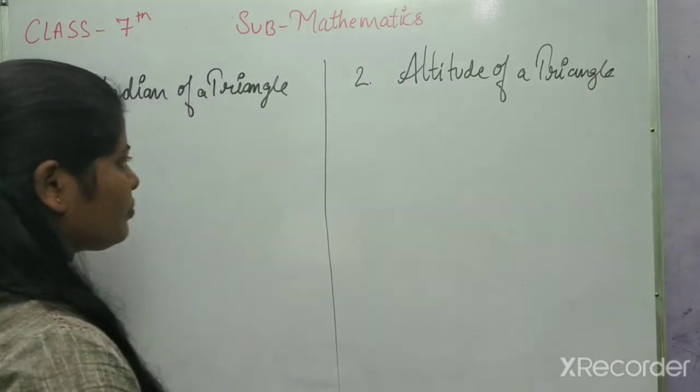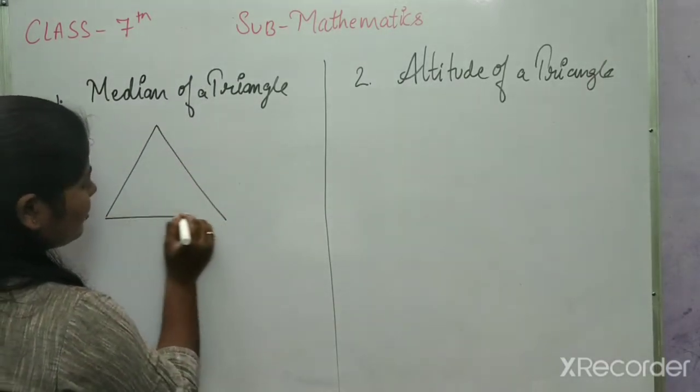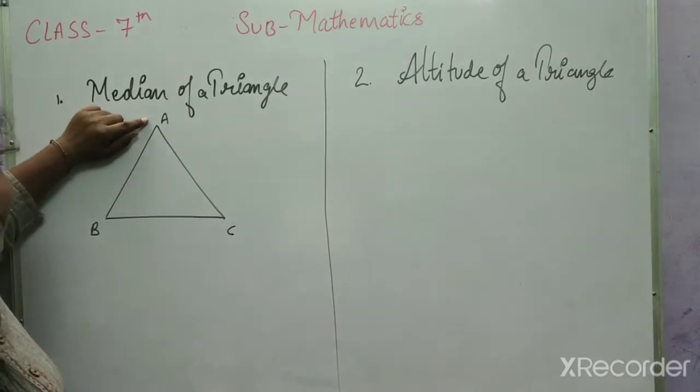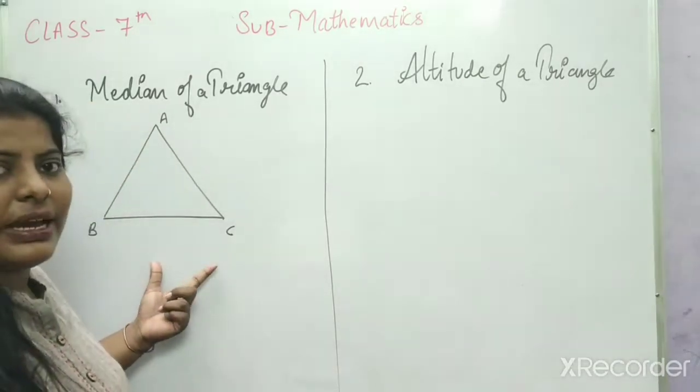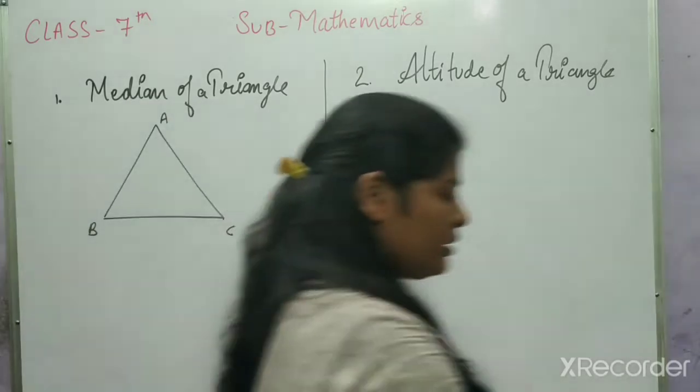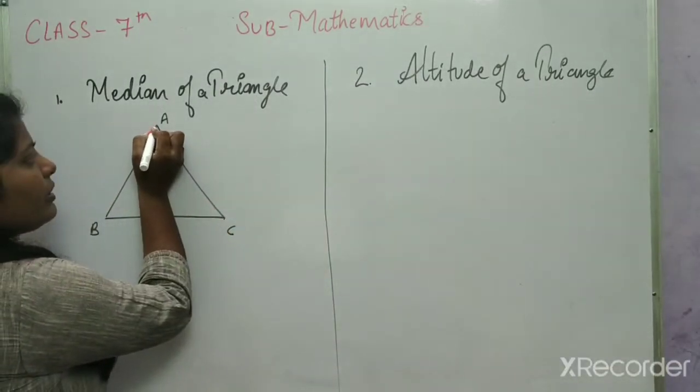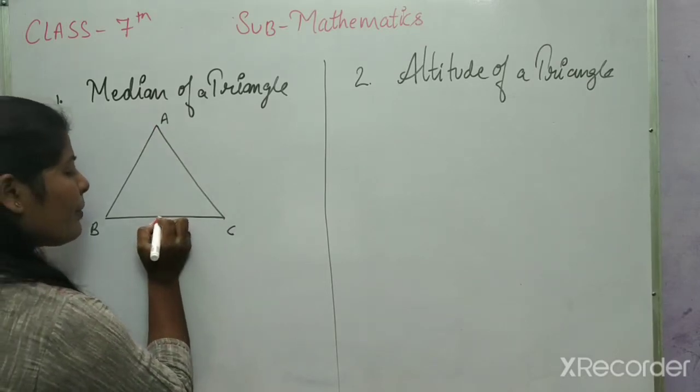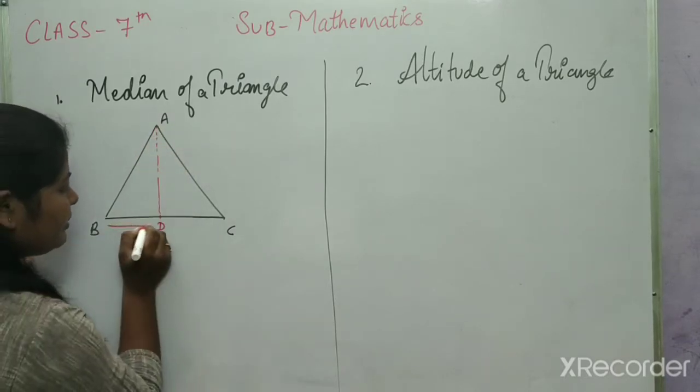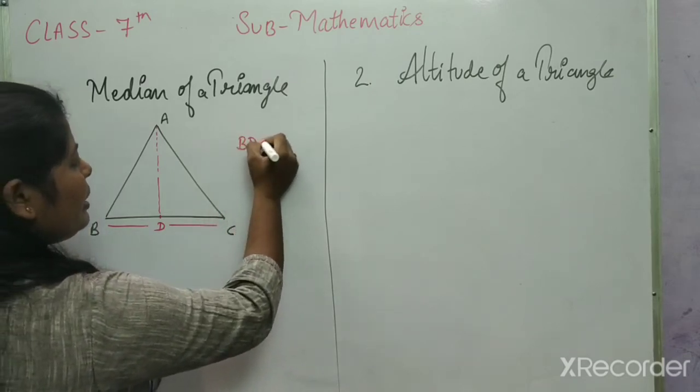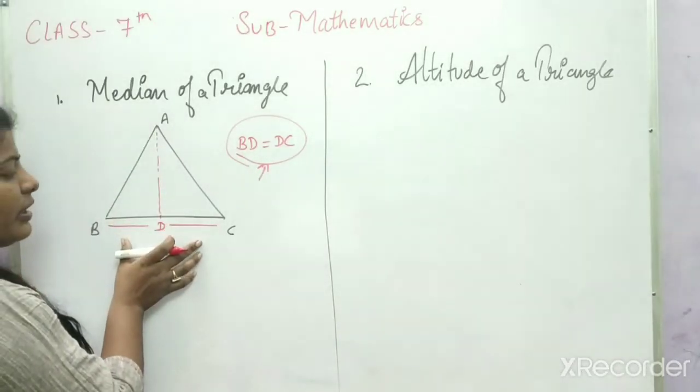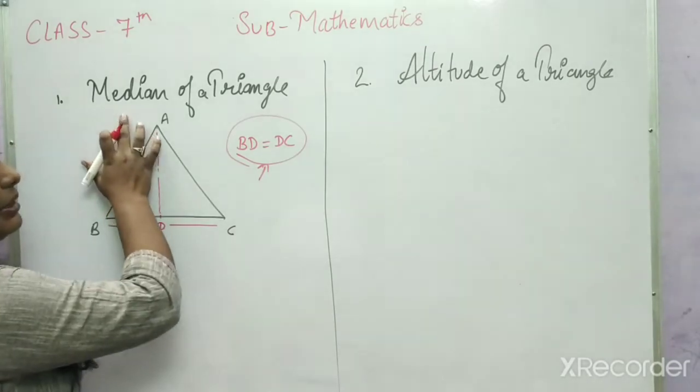What is median? In this triangle, from a vertex join the midpoint of opposite side. If I join this vertex to midpoint of BC, the midpoint is D. This distance BD equals DC. In median, a vertex joins the midpoint of opposite side.